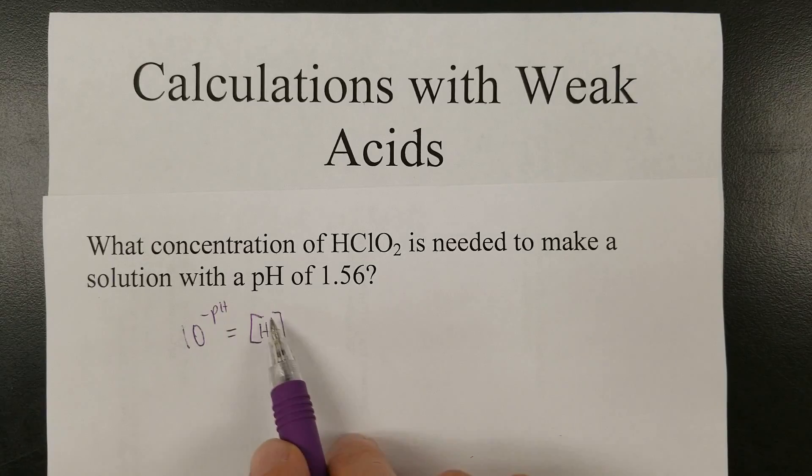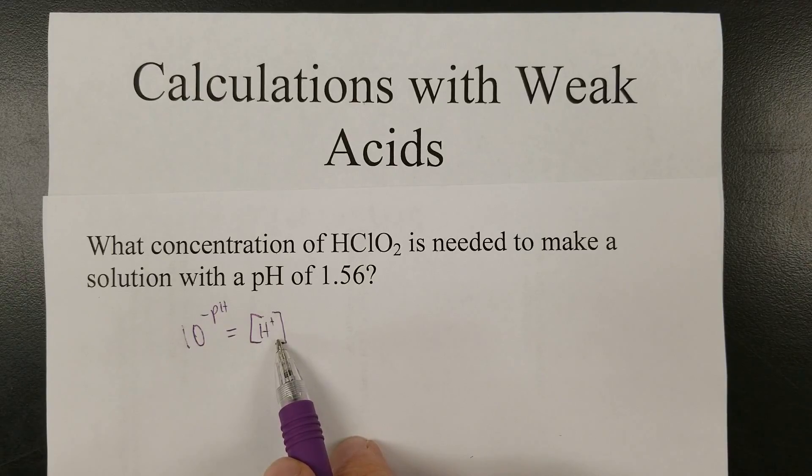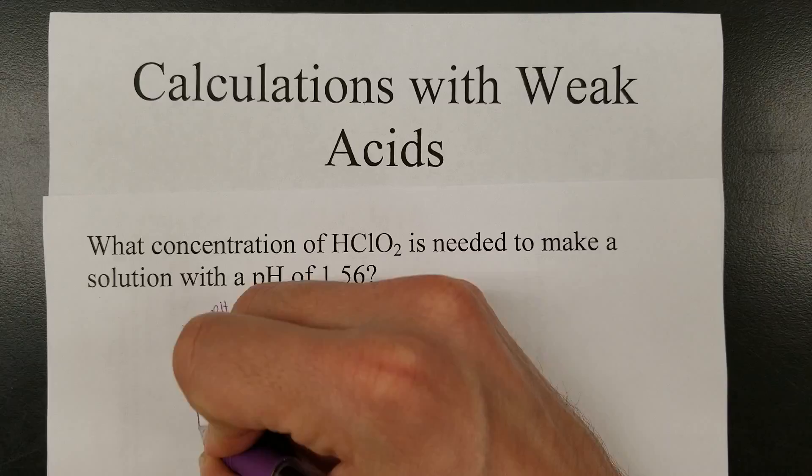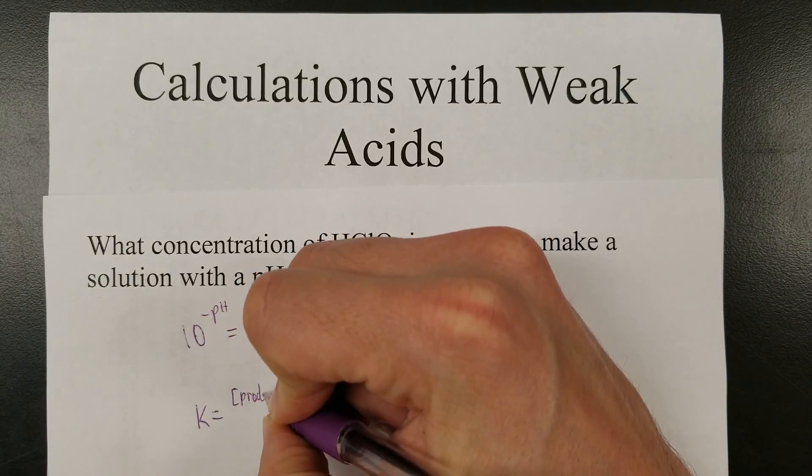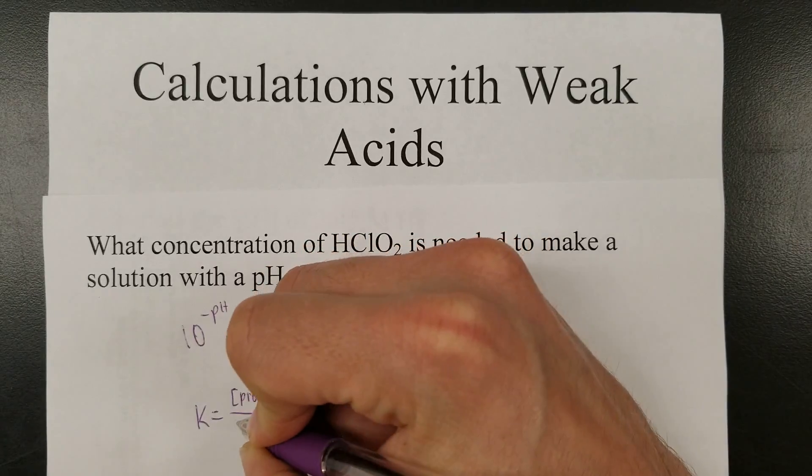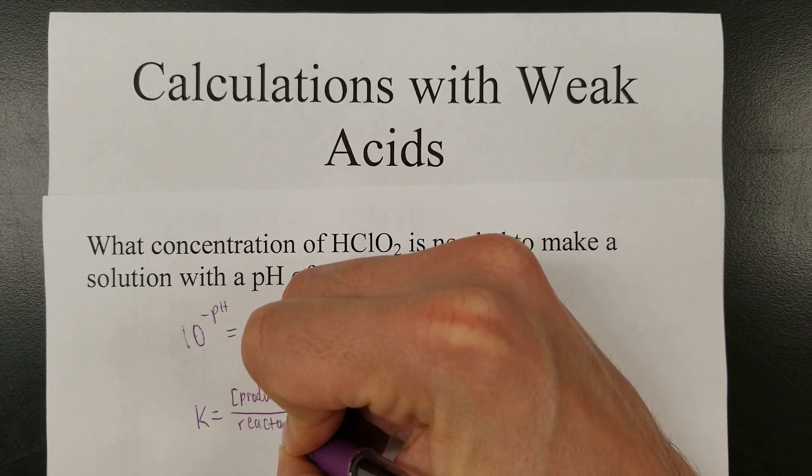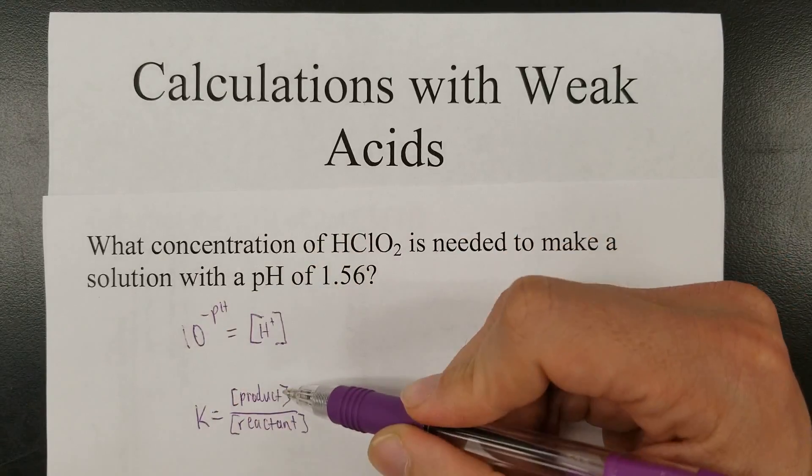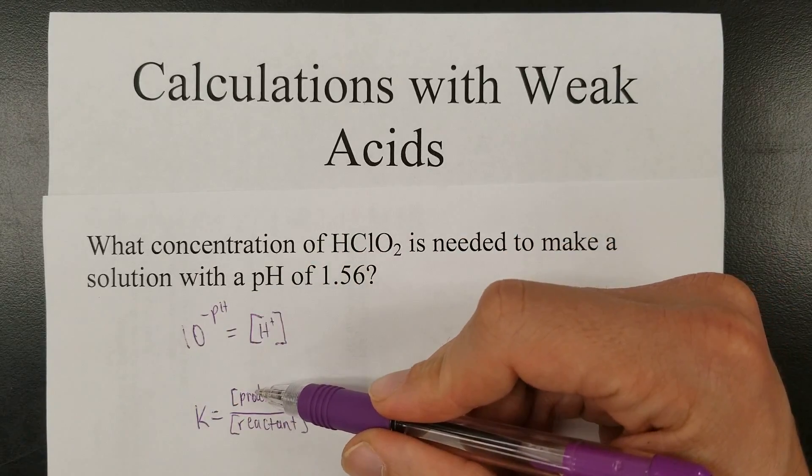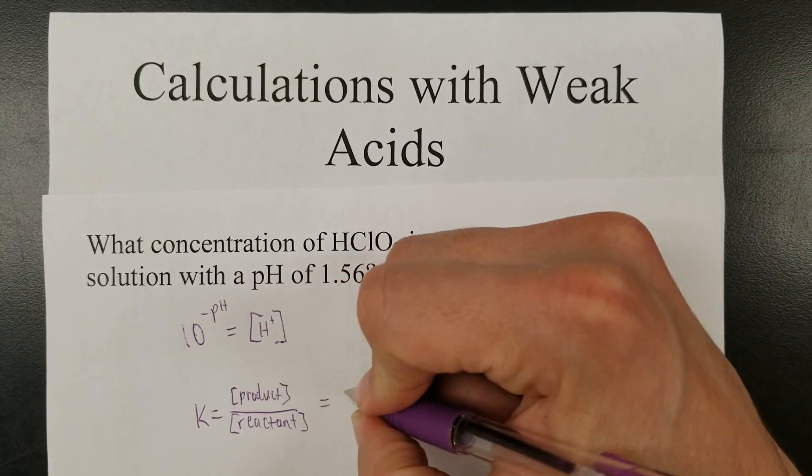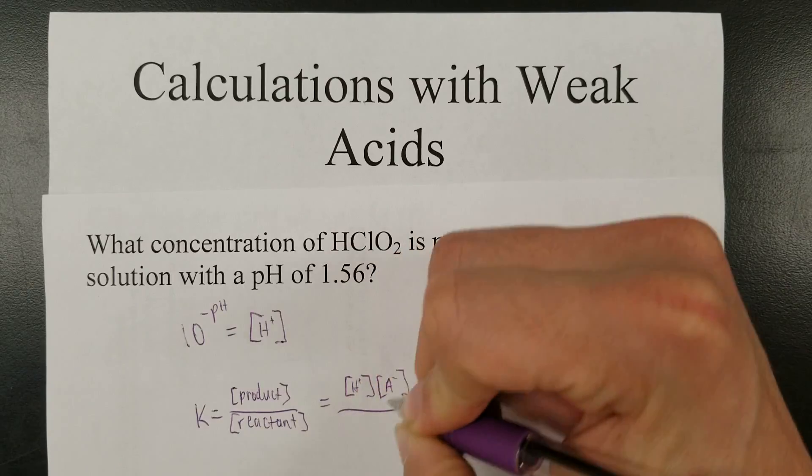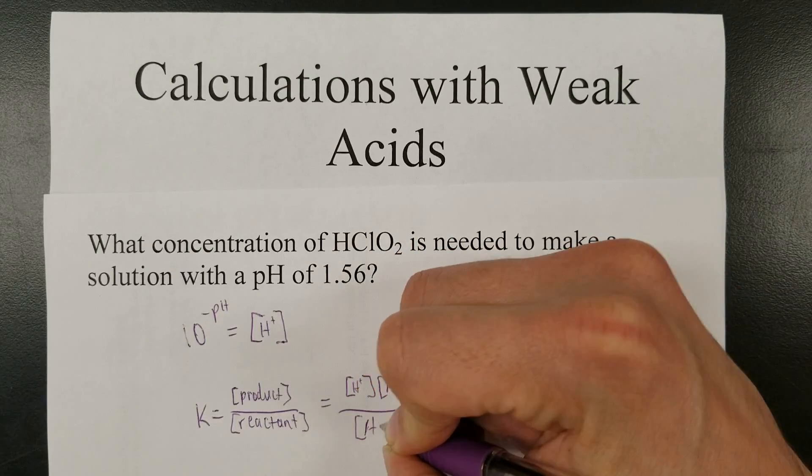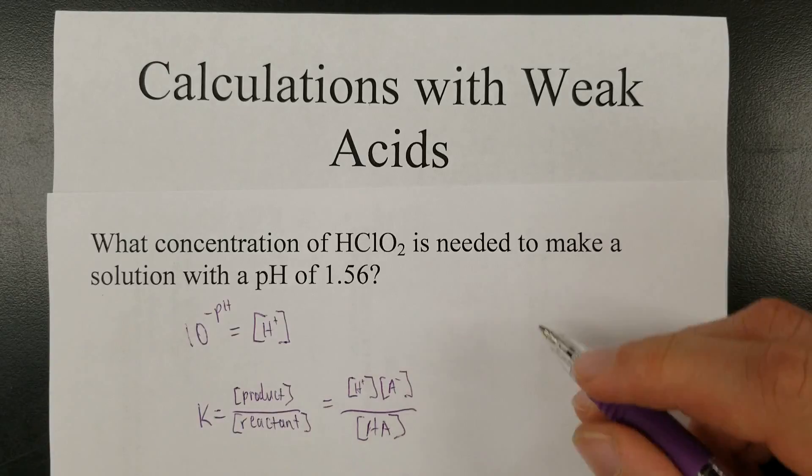Plan is we use this to figure out the hydrogen ion concentration, and then we'll use the equilibrium equation, the K equals product over reactant, and that will give us the hydrogen ion to be one of the things here. The hydrogen ion concentration, along with the anion concentration, would give us the information we need to find the original acid concentration.